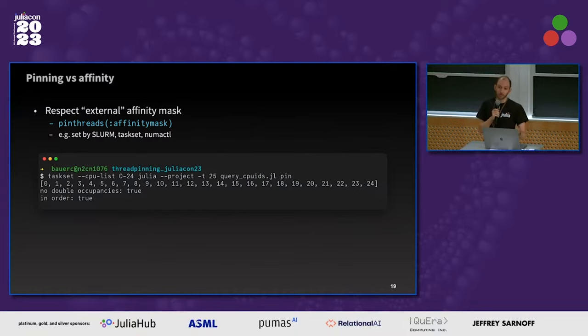We also have an option to respect external affinity masks. So if you're running under a Slurm allocation, which might already set the right affinities, you can write pinthreads(:affinitymask) in your code and it will respect that affinity mask and hopefully do the right thing.